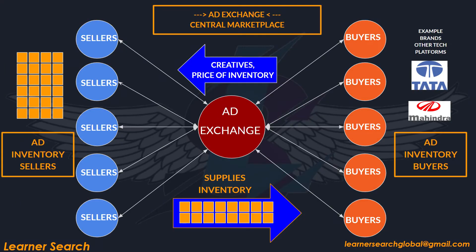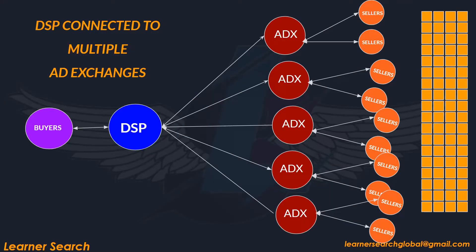Ad exchange is a central marketplace where it connects both buyers and sellers. On the buyer end, it connects to the DSP, and on the seller end, they connect to their sellers. Whenever a request is available from the DSPs, the ad exchange fulfills it with the help of the sellers they connect to.